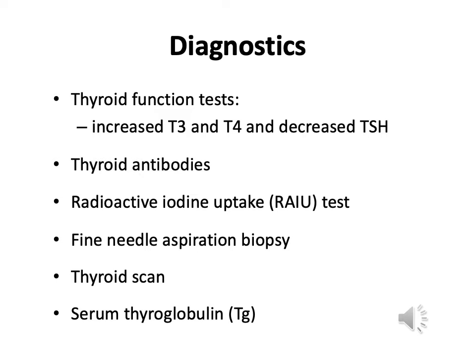Some ways to diagnose hyperthyroidism: we can take blood levels and see an increase in T3 and T4 and a decrease in TSH. Thyroid antibodies can differentiate between diseases — if there are thyroid antibodies, it could indicate Hashimoto's disease.